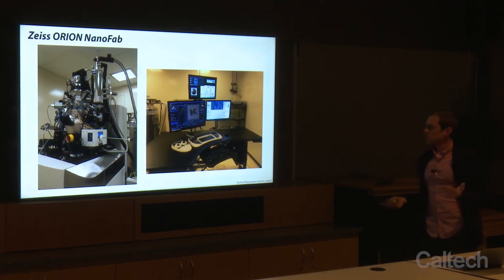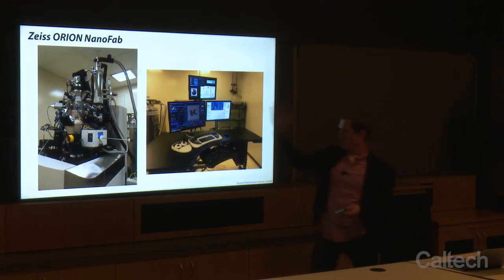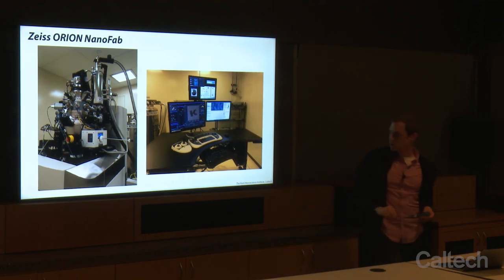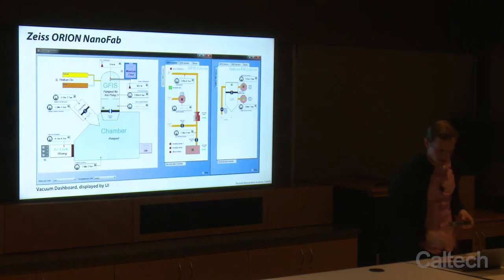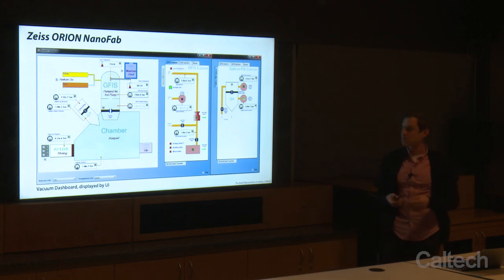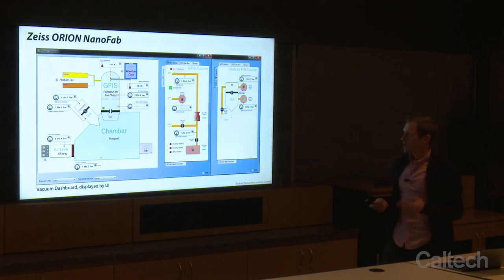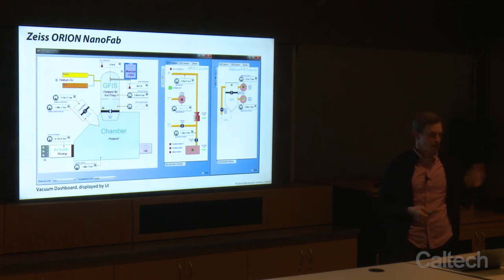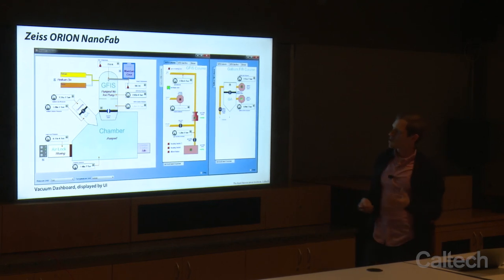Here is our microscope in the lab with our desktop setup. This is our Zeiss Orion Nanofab — the number one commercial microscope for helium and neon. While other companies are creating them, Zeiss got in early and has been selling these for a little over a decade. In our vacuum screen, we can see the vacuum diagram with our GFIS column, where we form our helium or neon beam at the top on our main optical axis.